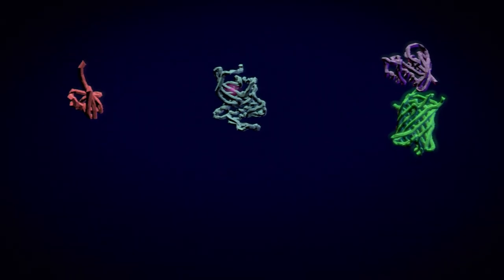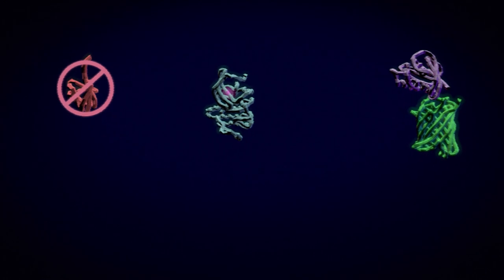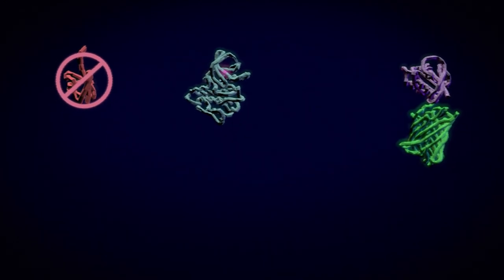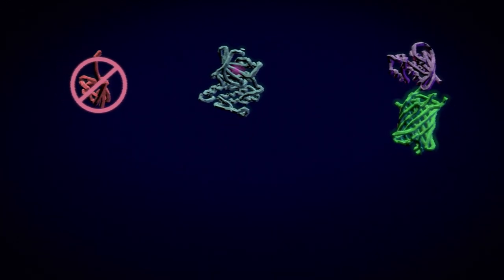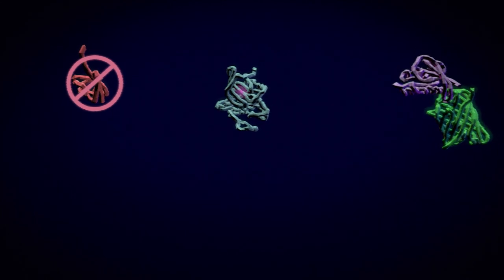You might want to make sure your cells can't produce that protein anymore, or you could introduce a particular mutation in your protein or attach a fluorescent tag to be able to see where your protein goes inside the cell.